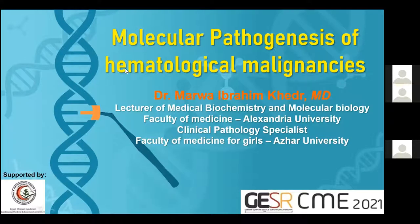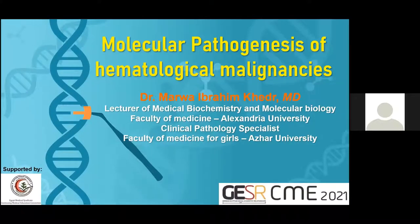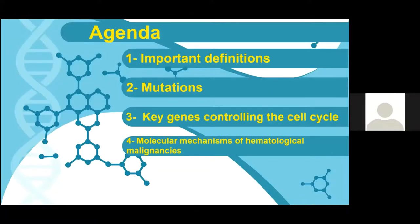Today, inshallah, we will talk about molecular pathogenesis of hematological malignancies. My name is Dr. Marwa Abrahim Khidr. I am lecturer of medical biochemistry and molecular biology at Alexandria Faculty of Medicine and clinical pathology specialist at Faculty of Medicine for Girls at Azhar University. Today we'll talk about some important definitions regarding the molecular mechanisms of hematological malignancies and mutations, key genes controlling the cell cycle and the molecular mechanisms of hematological malignancies.